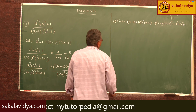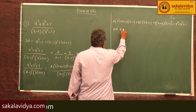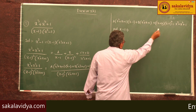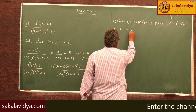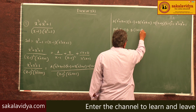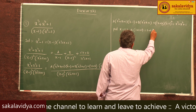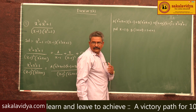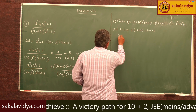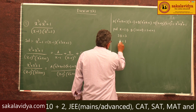Now put x = 1. The first and third terms become 0. We get B(1 + 1 + 1) = 1 + 1 + 1, so 3B = 3, therefore B = 1.